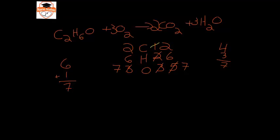So now I have two carbons here on the reactant side, two on the product side, six hydrogens on the reactant side, six on the product side, and seven oxygens on the reactant side and seven on the product side so I have a balanced chemical equation.